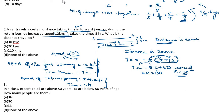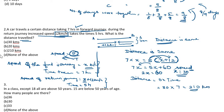But we need the distance, not just the speed. Distance = speed × time. Taking the forward journey: 30 × 7 = 210. You can check with the return journey also: 42 × 5 = 210. Distance is the same — 210 kilometers. The answer is option C.